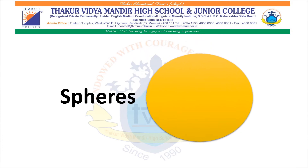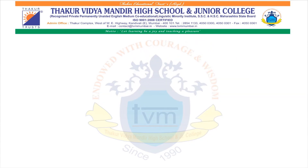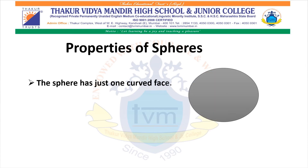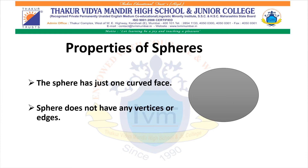Spheres. Properties of spheres: The sphere has just one curved face. A sphere does not have any vertices or edges.